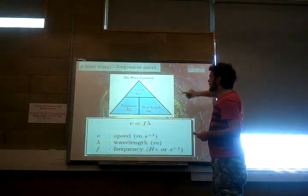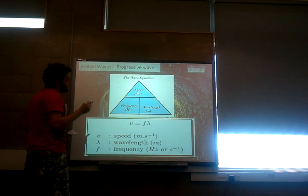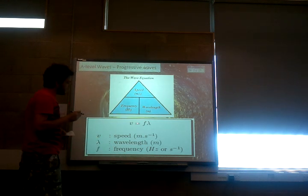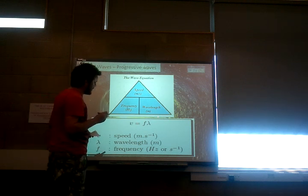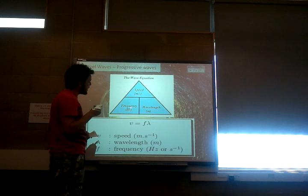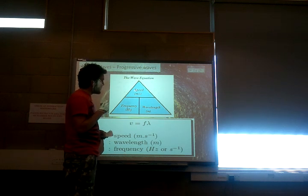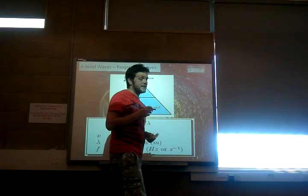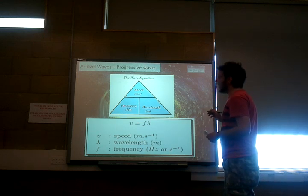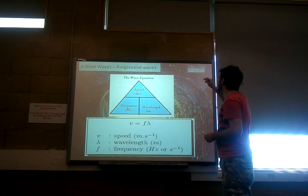The wave equation — which you should remember from key stage four — is used to work out the speed of a wave. Using an equation triangle: speed equals frequency multiplied by wavelength. The speed of sound is generally 340 metres per second, and the speed of light is roughly 300 million metres per second. This equation can also be rearranged to find frequency or wavelength.